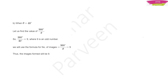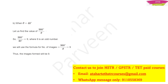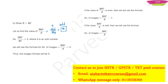Another example: if theta is 40°, then 360 divided by 40 gives 9, which is an odd number. Since it is odd, we do not subtract 1 — the number of images is simply 9. So: even → subtract 1 from 360/θ; odd → use 360/θ as it is.